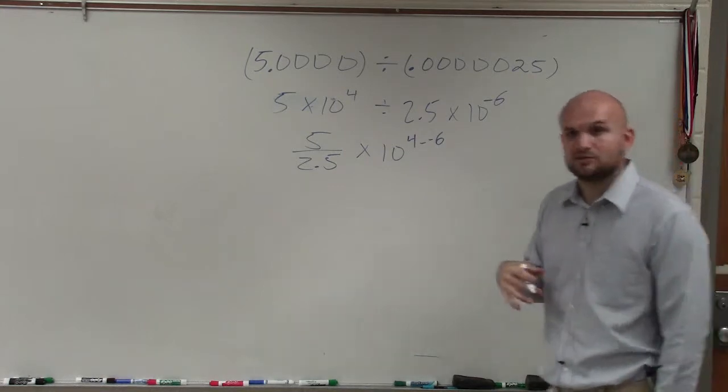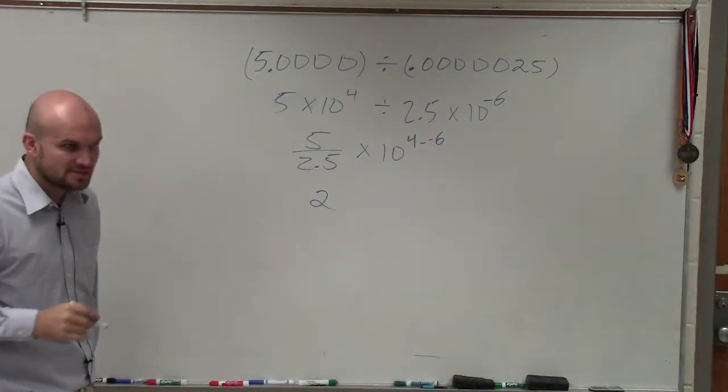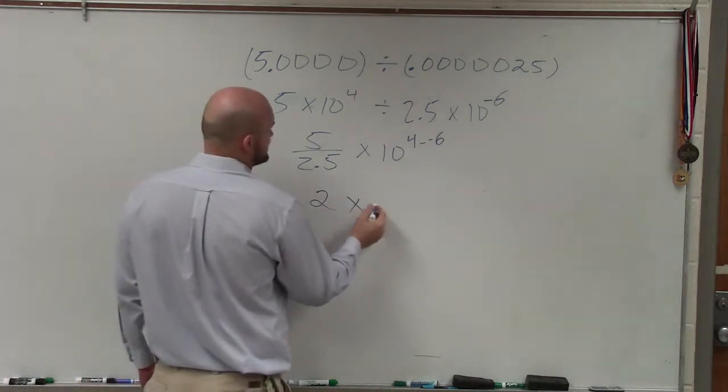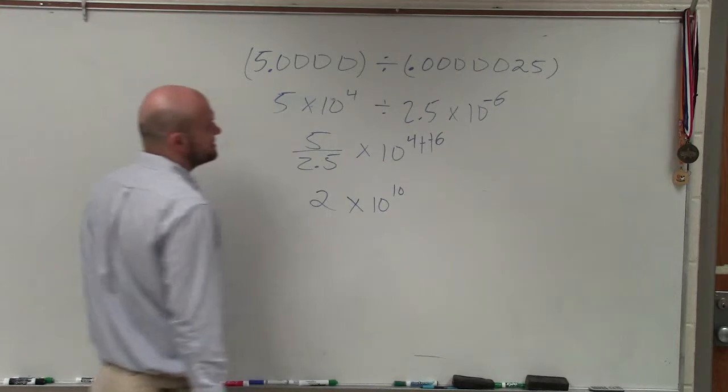Now 5 divided by 2.5, you don't need to do long division. You should know that goes in there twice. And that's going to be times 10 to the 4 minus 6. So that's a double negative to the 10th power.